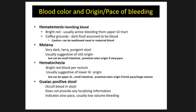Depending on what the blood looks like, we can tell the origin and pace of bleeding. Hematemesis is vomiting blood — it could be bright red, usually signifying active bleeding. Coffee grounds is dark fluid assumed to be blood, but it could be swallowed nasal blood or swallowed maternal blood in a breastfed infant. Melena is very dark, tarry, pungent stool, usually suggestive of an upper GI origin, but could also be a slow small intestinal or proximal colon bleed.